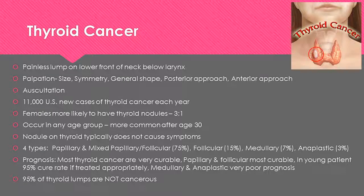Thyroid cancer is usually noted as a painless lump on the lower front of the neck below the larynx. You will perform palpation and auscultation, noting the size, symmetry, and general shape, using both a posterior and anterior approach. About 11,000 new U.S. cases of thyroid cancer develop each year. Females are more likely to have thyroid nodules, and it occurs in any age group but is more common after age 30.